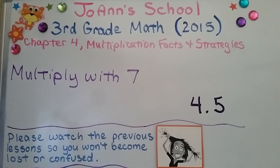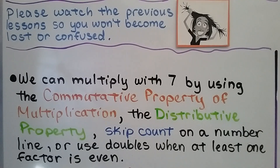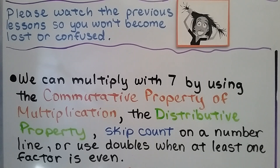Lesson 4.5: Multiply with 7. Make sure you've watched the previous lesson so you don't become lost or confused. We can multiply with 7 by using the commutative property of multiplication, the distributive property, skip counting on a number line, or using doubles when at least one factor is even.